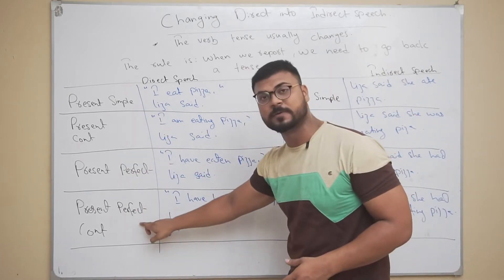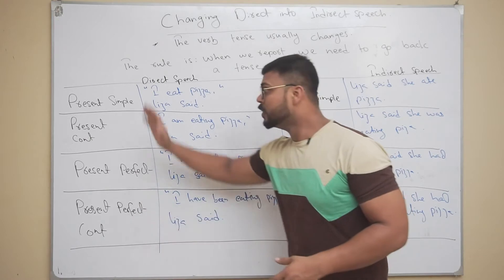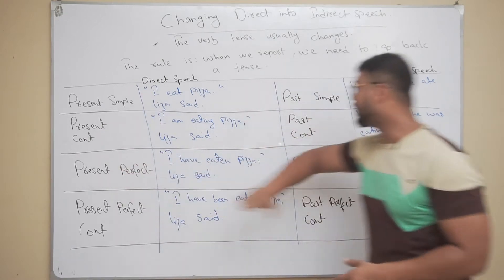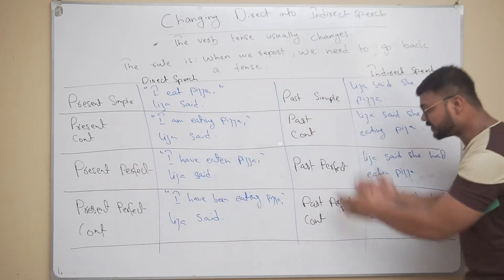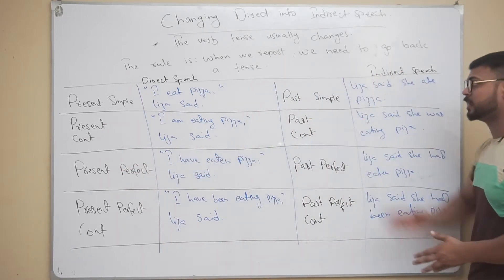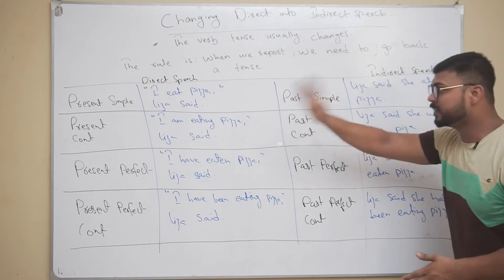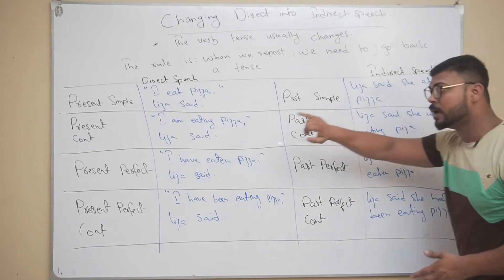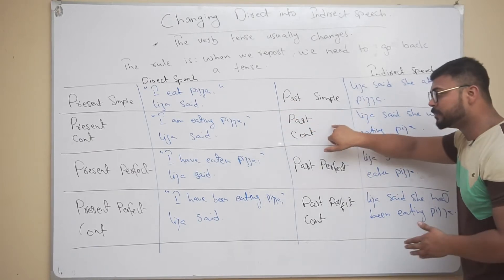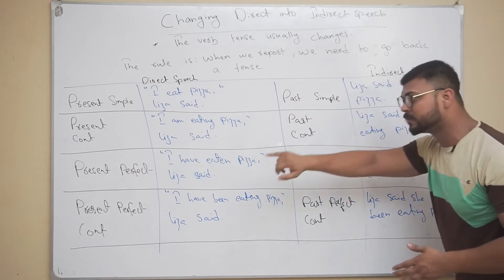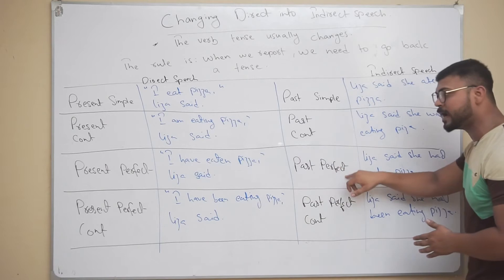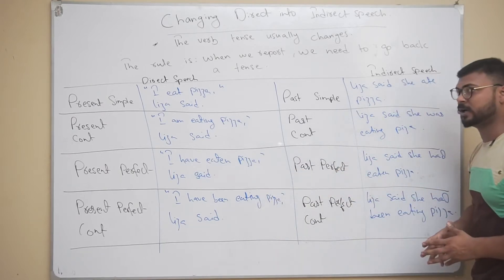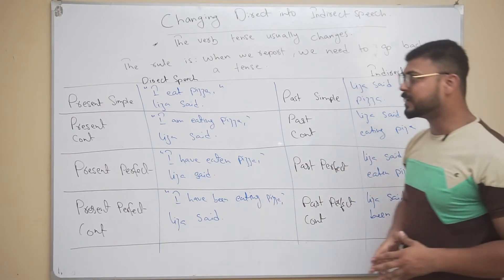Here are some examples. Present simple tense, present continuous, present perfect, and present perfect continuous — these tenses are changed into these tenses. Present simple will be converted into past simple, present continuous into past continuous, present perfect into past perfect, and present perfect continuous into past perfect continuous.